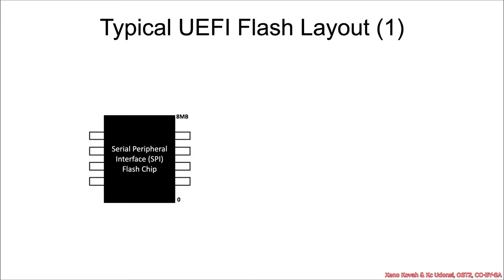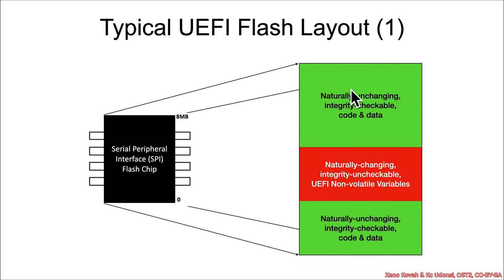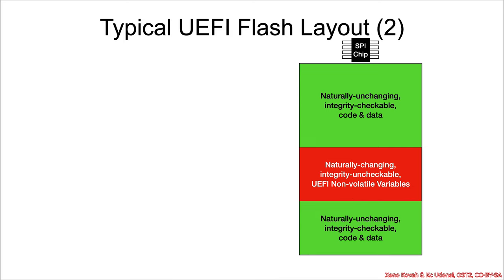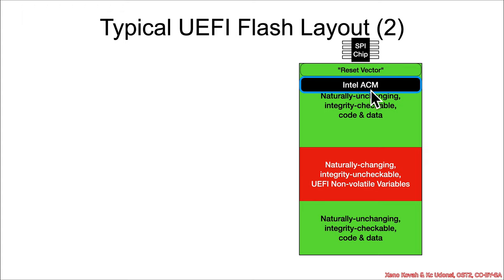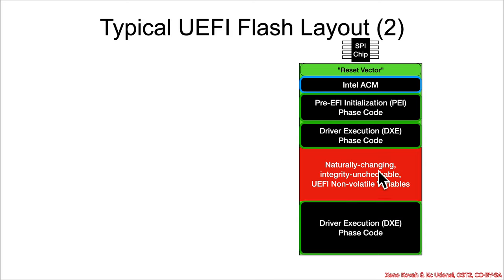Once you understand how the secure booting system works, you have to understand what lives on a serial peripheral interface, or SPI flash chip. This is the non-volatile storage where Intel firmware is stored. The chip — say 8 megabytes on your motherboard — has unchanging code that's easy to integrity check, UEFI non-volatile variables that aren't easy to check, and then some more code.